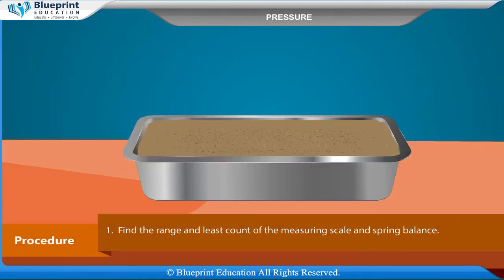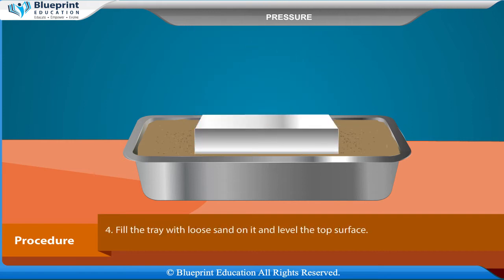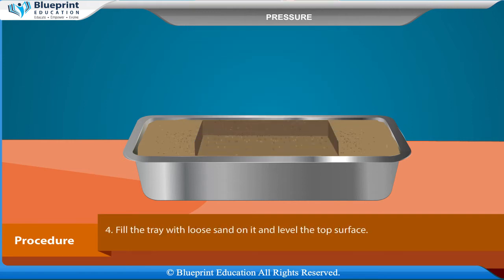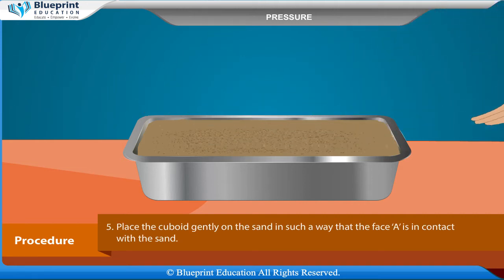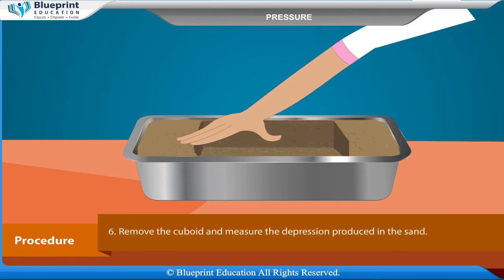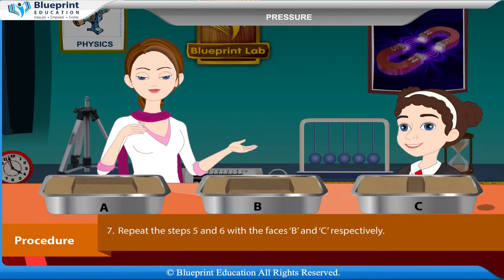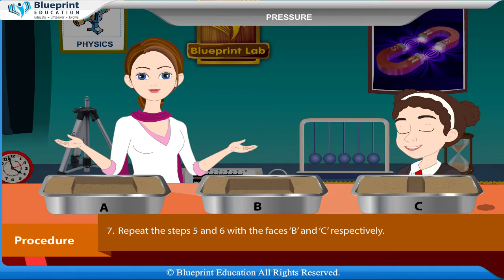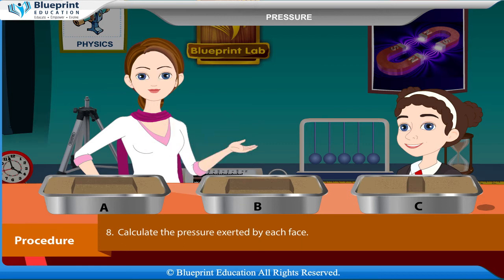Procedure: Find the range and least count of the measuring scale and spring balance. Find the length, breadth, and height of the cuboid using the scale. Note the weight of the cuboid from the spring balance. Fill the tray with loose sand and level the top surface. Place the cuboid gently on the sand so that face A is in contact with the sand. Remove the cuboid and measure the depression produced in the sand. Repeat the steps with faces B and C respectively, then calculate the pressure exerted by each face.